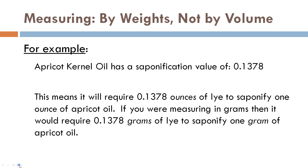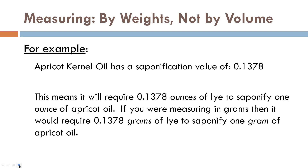For example, apricot kernel oil has a saponification value of 0.1378. That means it will require 0.1378 ounces of lye to saponify one ounce of apricot oil. If you were measuring in grams, then it would be 0.1378 grams of lye to saponify one gram of apricot oil. Keep your units consistent — whatever the sap value is, just apply it to ounces, grams, or whatever you're measuring your recipe in.